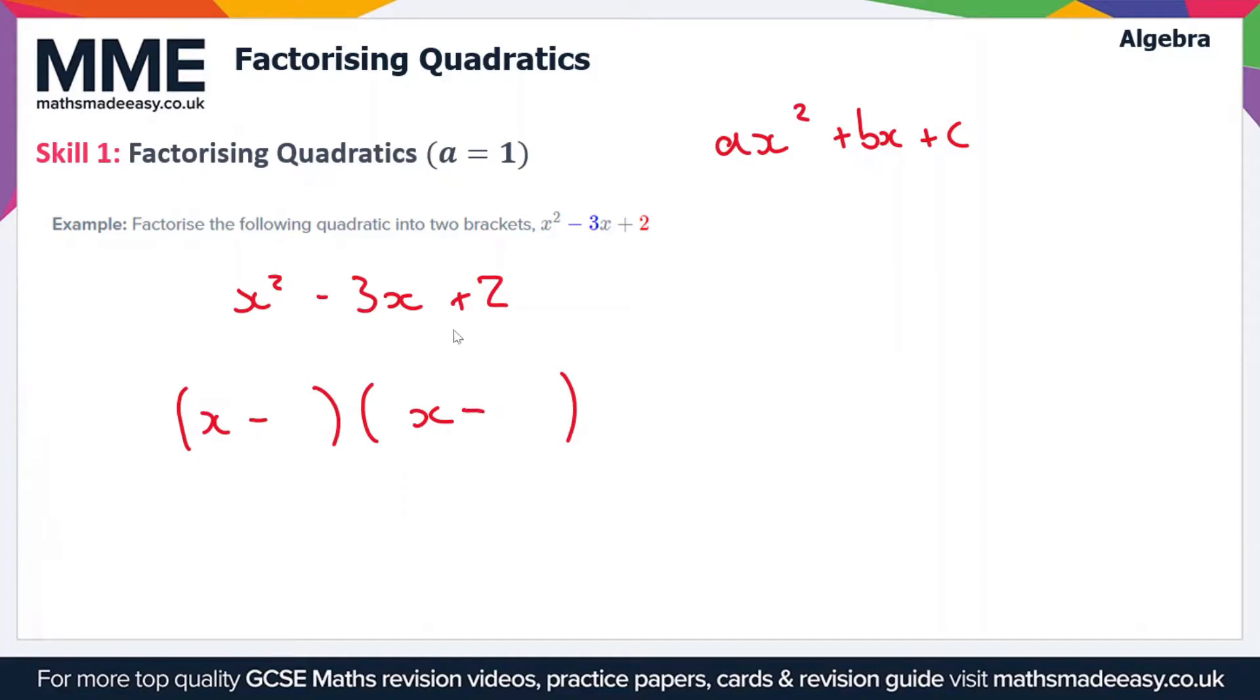Now we just need to look for the factors of 2 which add to give -3. That's going to be -2 and -1. If you add -2x and -1x together, you get -3x, and when you multiply -2 and -1 together, you get +2. Let's move on now to look at another example.